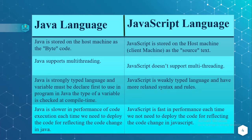Java is a strongly typed language and variables must be declared first before use in the program. In Java, the type of a variable is checked at compile time. Whereas JavaScript is a weakly typed language and has more relaxed syntax and rules.